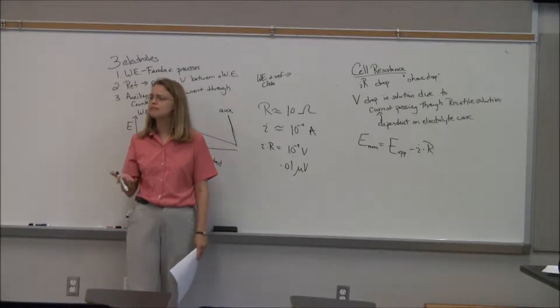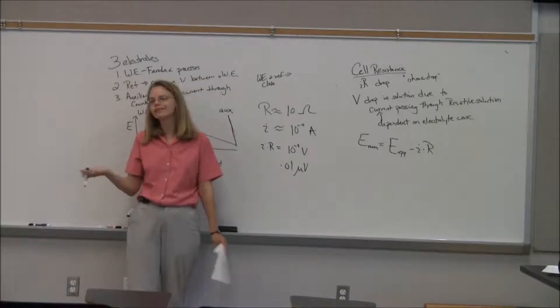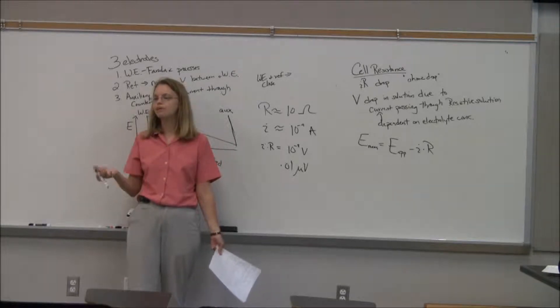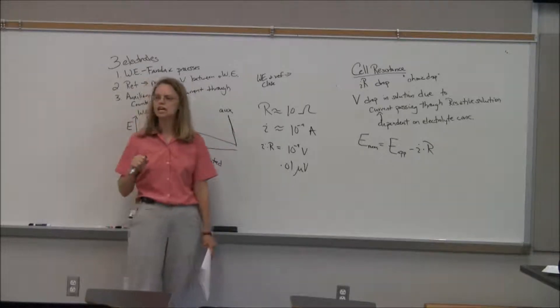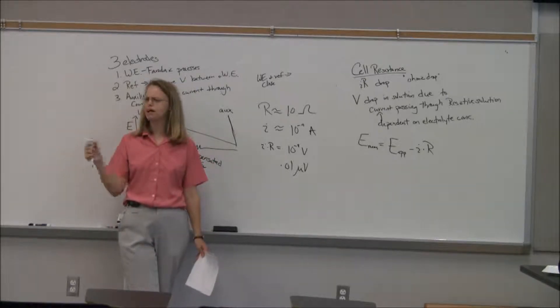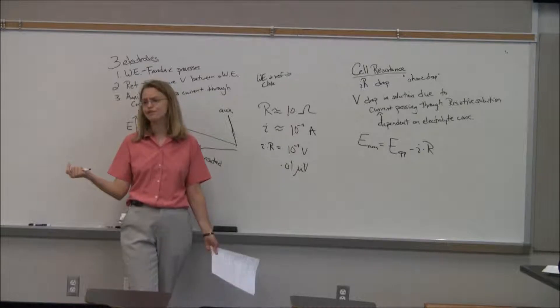And the reason it's not a big deal is because your current is tiny. It's all in the current. You wouldn't want a high resistance, but it's all in the fact that we measure tiny current. So we can get away with two electrodes because our current is so tiny. Just because our current is so tiny.